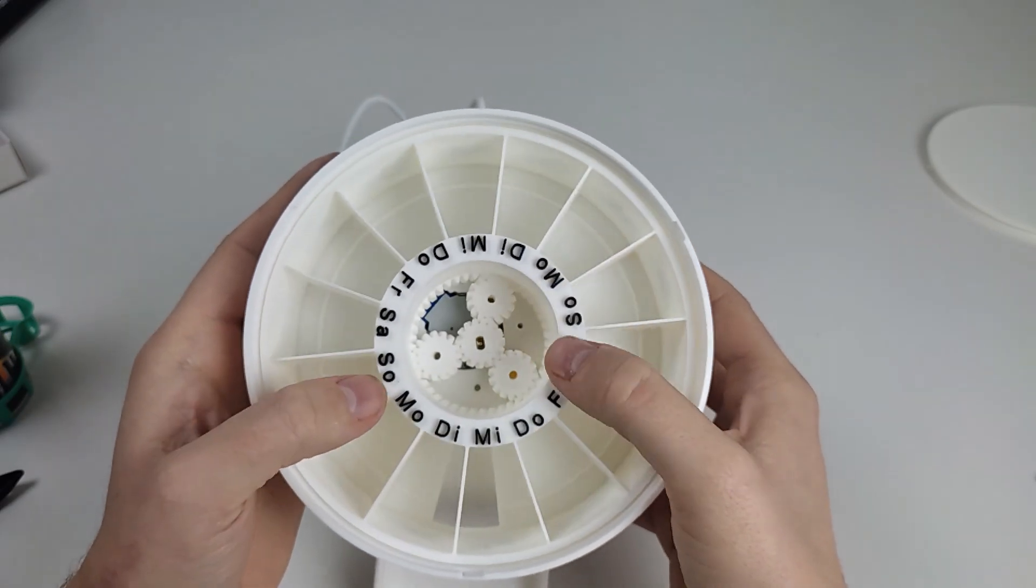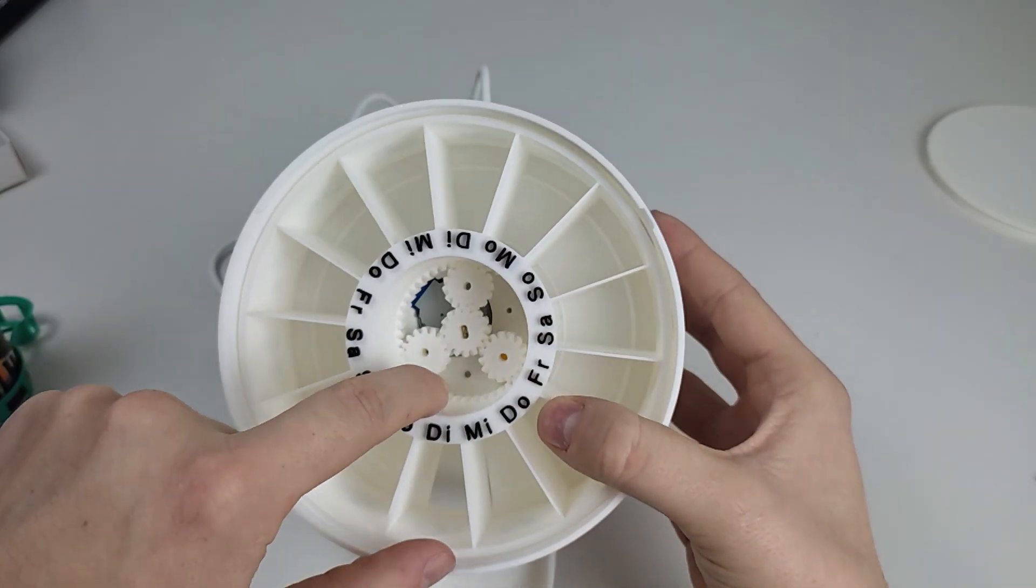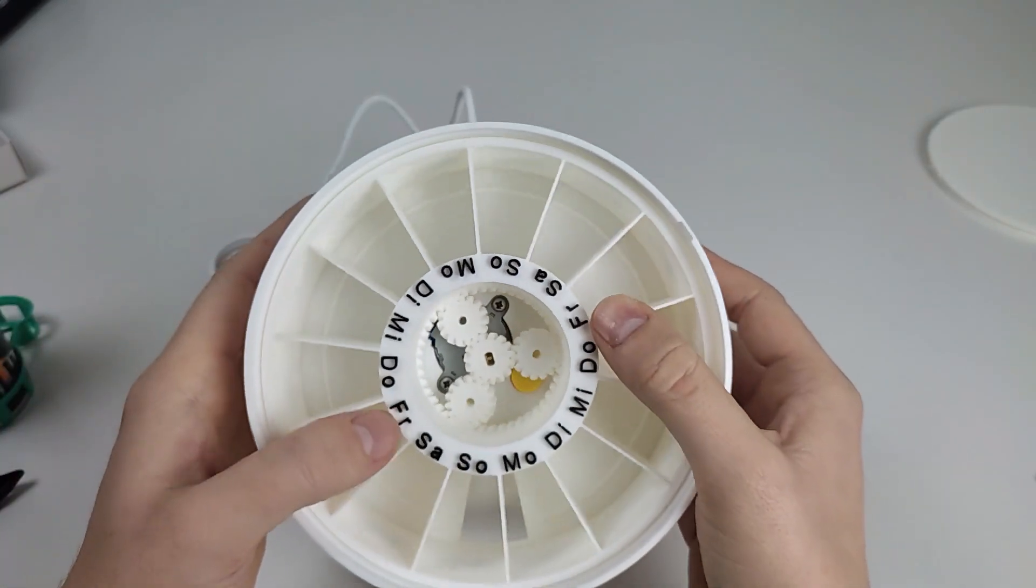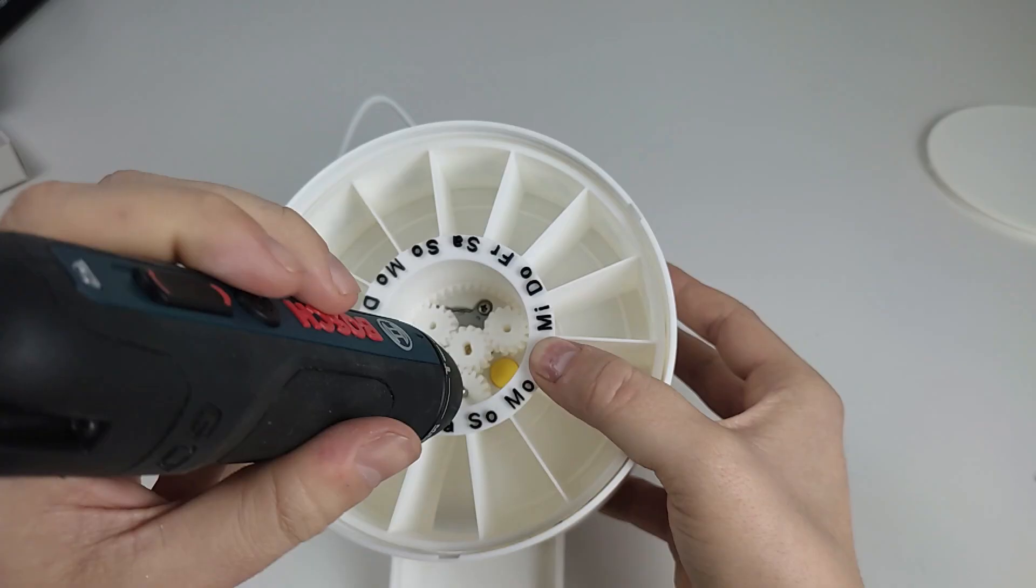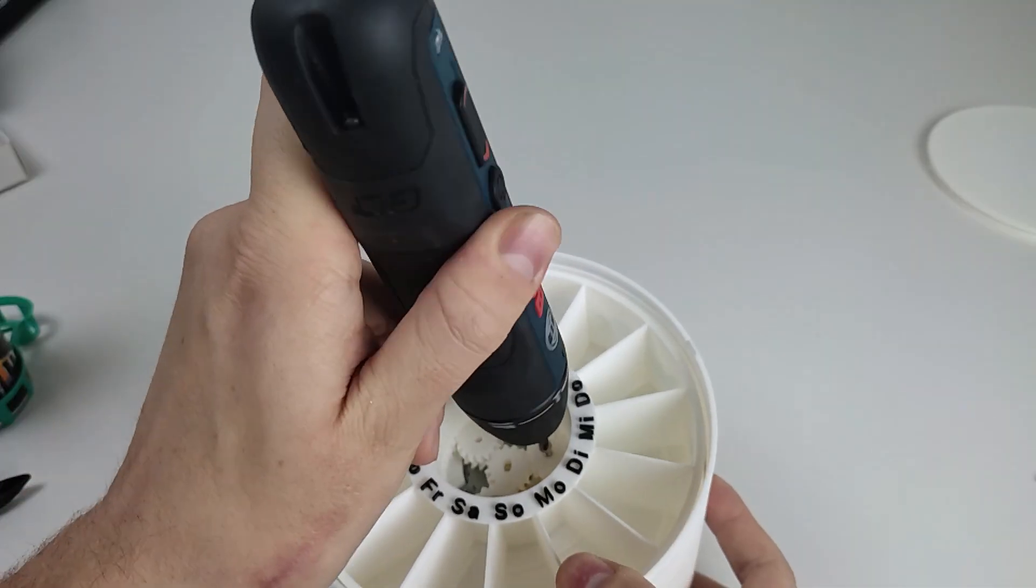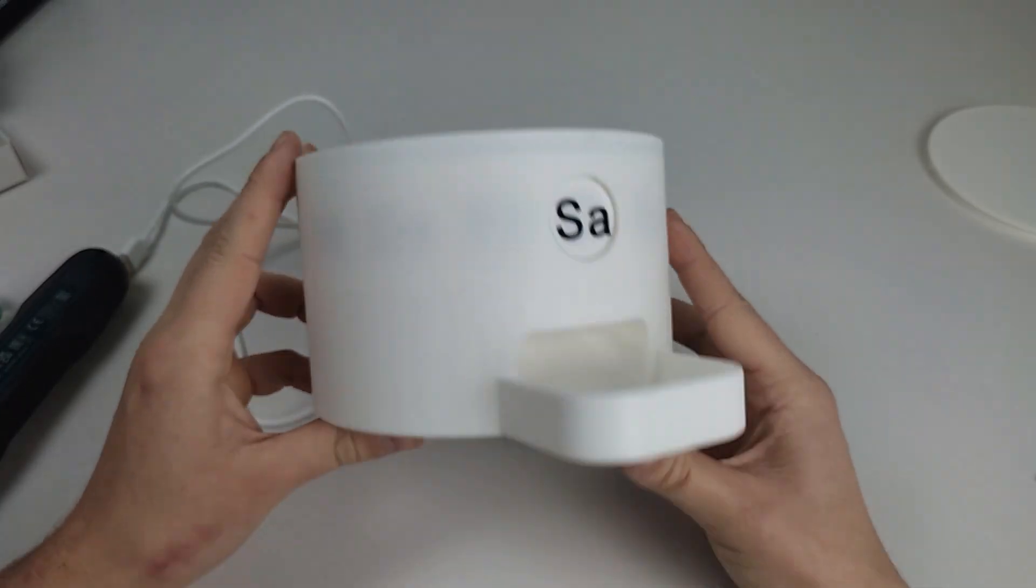The tablet compartment should be able to rotate freely. Secure the outer planetary gears to the base using the two long screws in the designated holes. Make sure not to tighten the screws too much so the gears can spin freely.